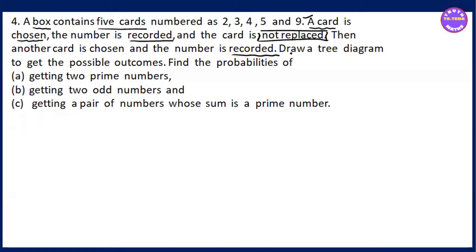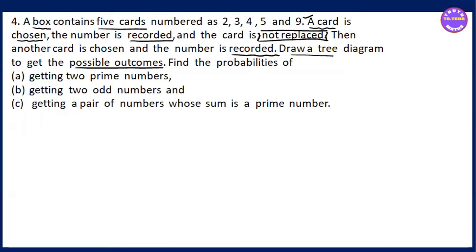Draw a tree diagram. A tree diagram is used to get the possible outcomes. The possible outcome is to get the probability of getting a prime number.